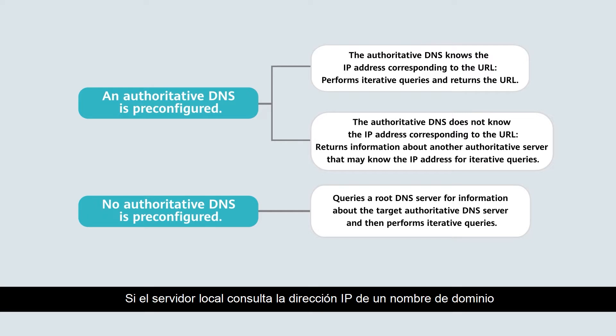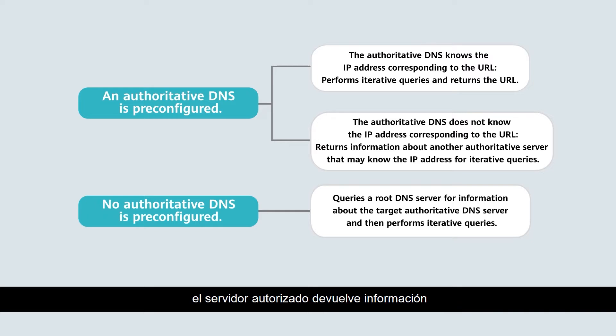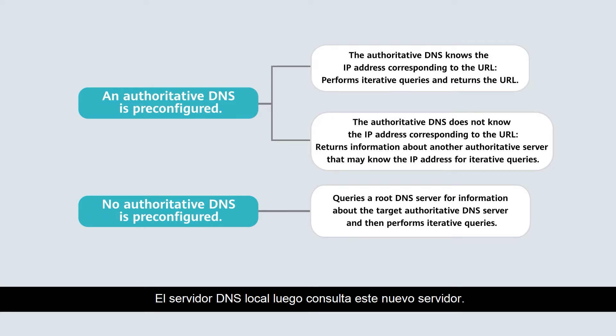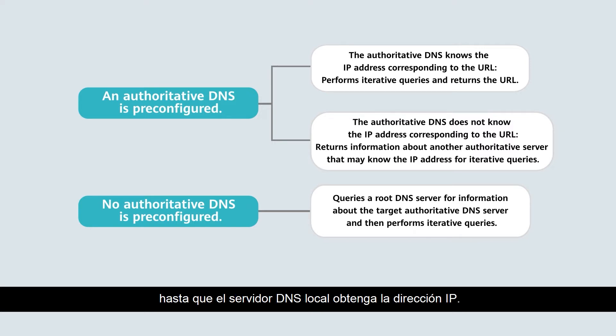If the local server queries the IP address of a domain name but the authoritative server does not know the IP address, the authoritative server retains information about another authoritative server that may know the IP address. The local DNS server then queries this new server. If the new server doesn't know either, this process repeats until the local DNS server obtains the IP address.